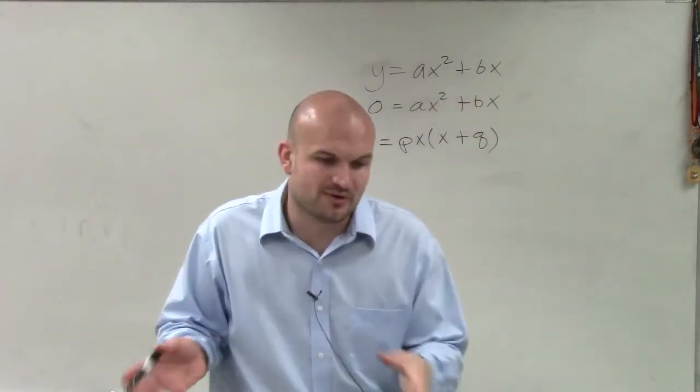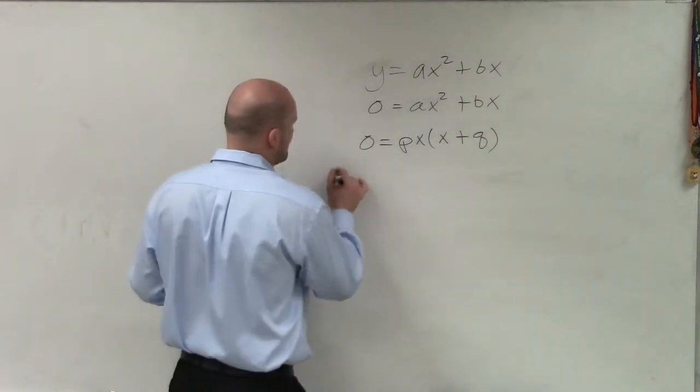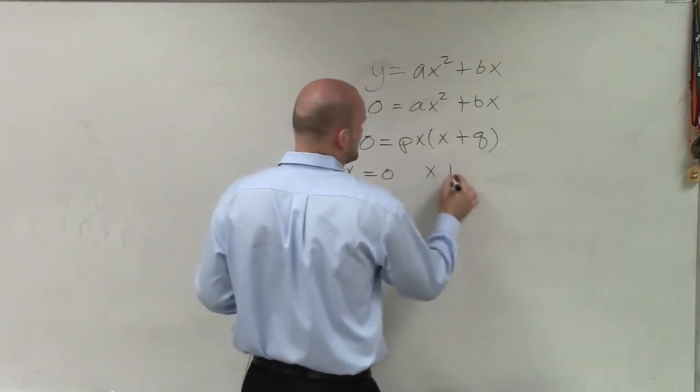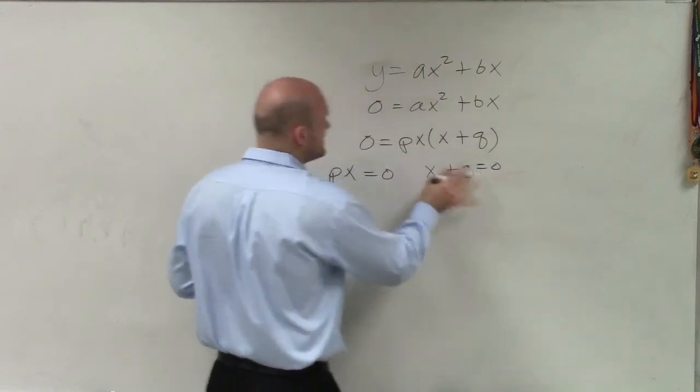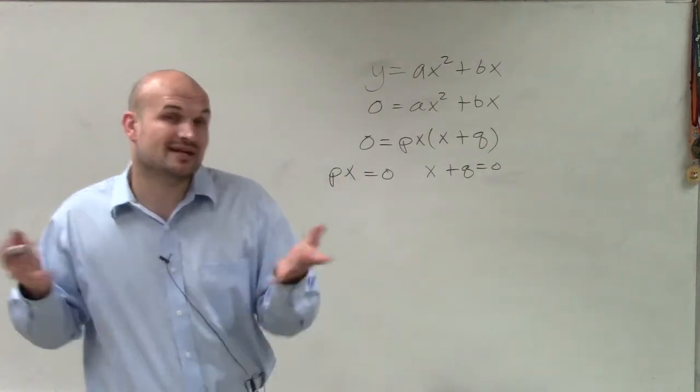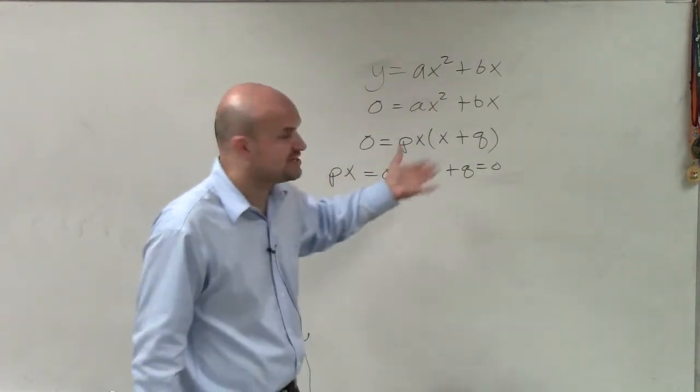But the main important thing when solving this is then we can use our 0 product property. So we can set each of these both equal to 0. And then we can now use our inverse operations to solve for x for both these. And we're going to have our different solutions.